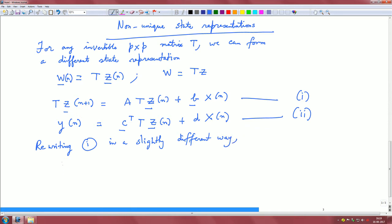When we do that, what really happens is as follows. You see, z(n+1) is basically, we pre-multiply equation 1 by T inverse, and since it is an invertible matrix T inverse should exist.